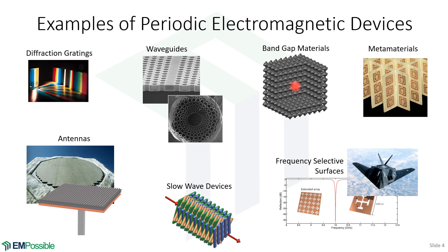When waves hit frequency selective surfaces, we can do all kinds of cool things. Generally, frequency selective surfaces are used for filtering, but they can do other tasks too, such as invisibility.